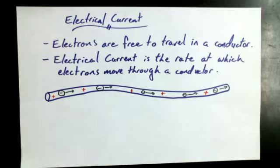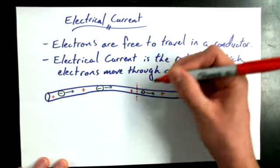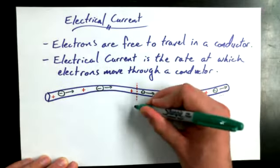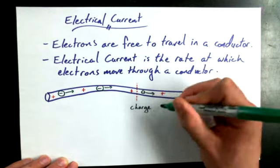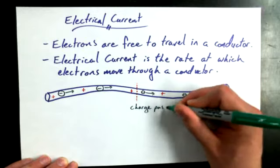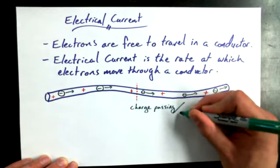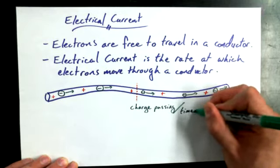And if we wanted to talk about these electrons that are moving along when current is flowing, we could say, look, if I want to actually know the current flow rate, what I'm really talking about is the amount of charge passing a point divided by the amount of time that goes by.